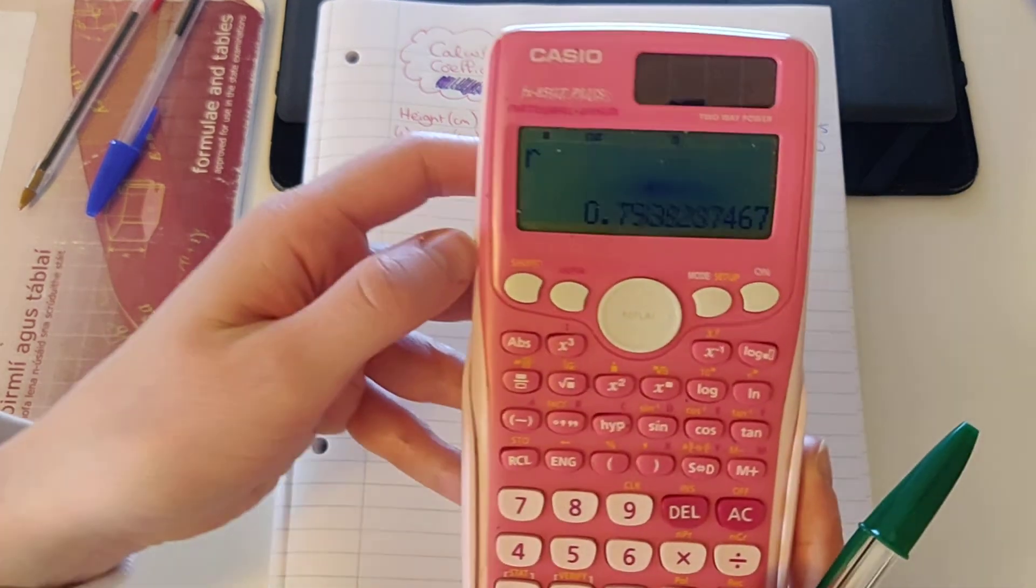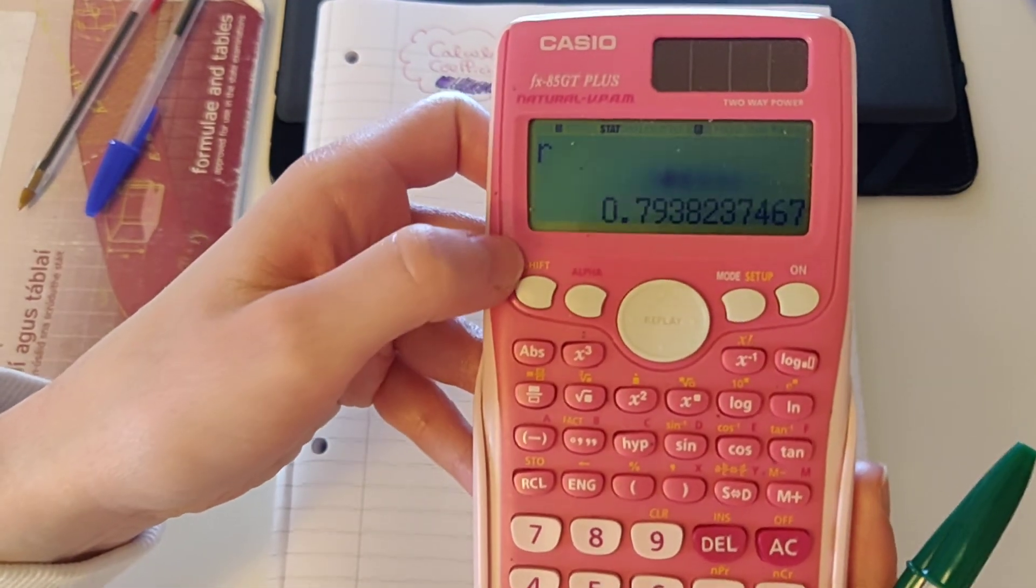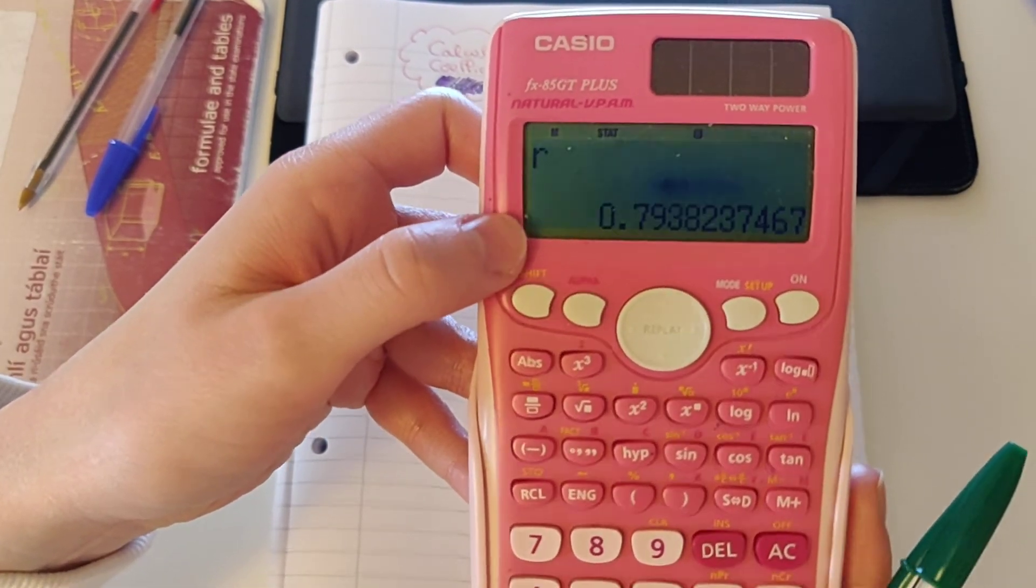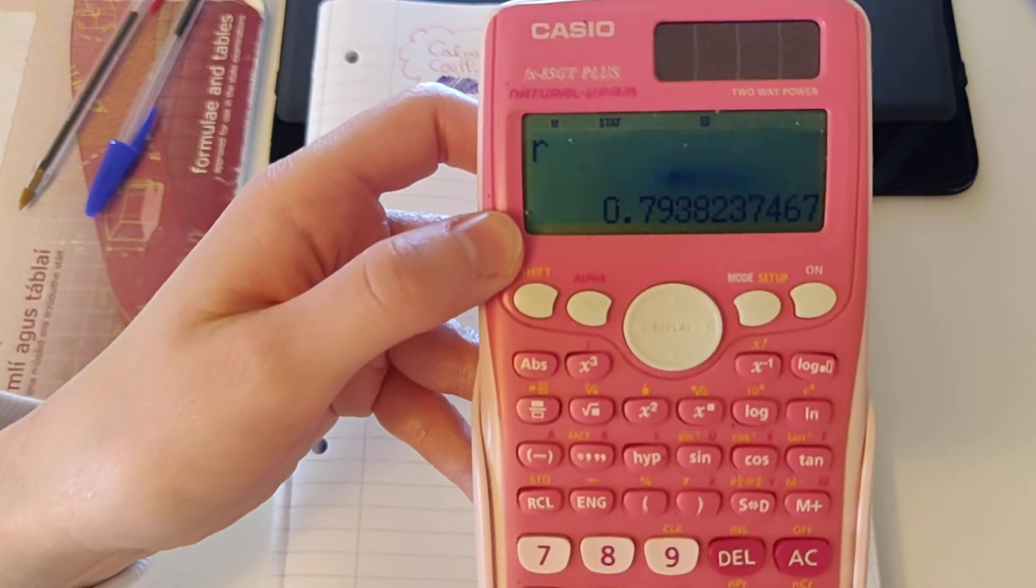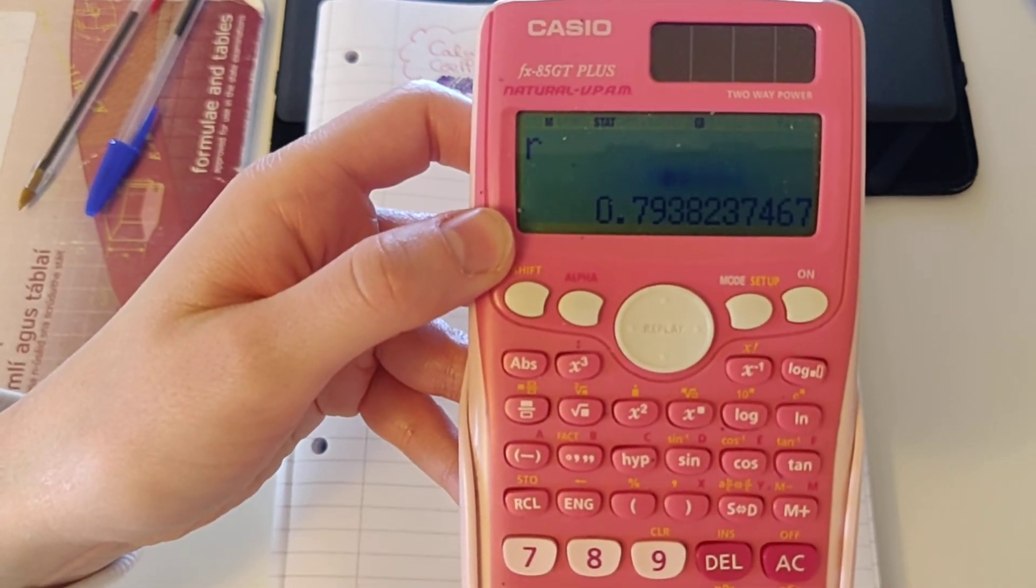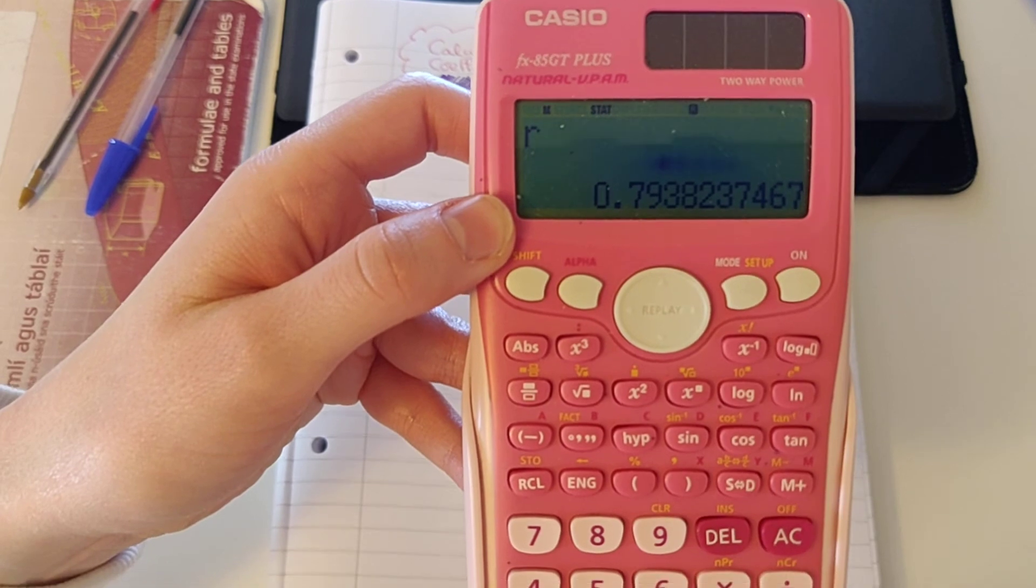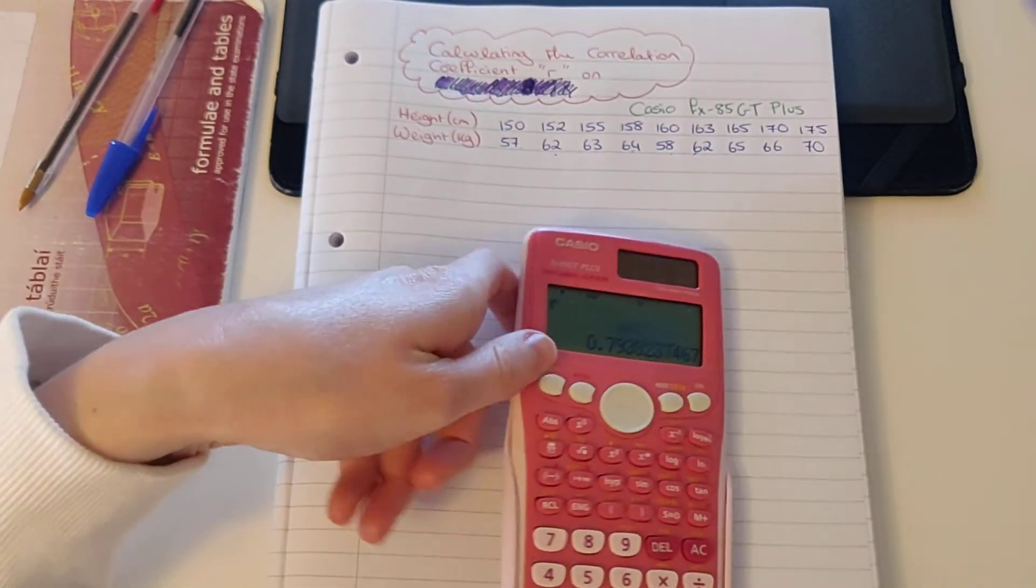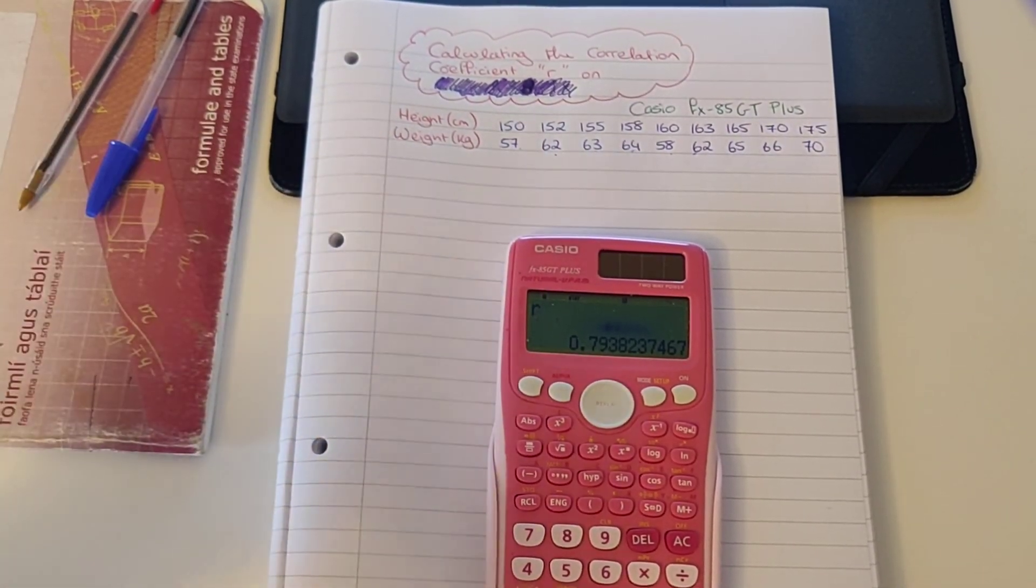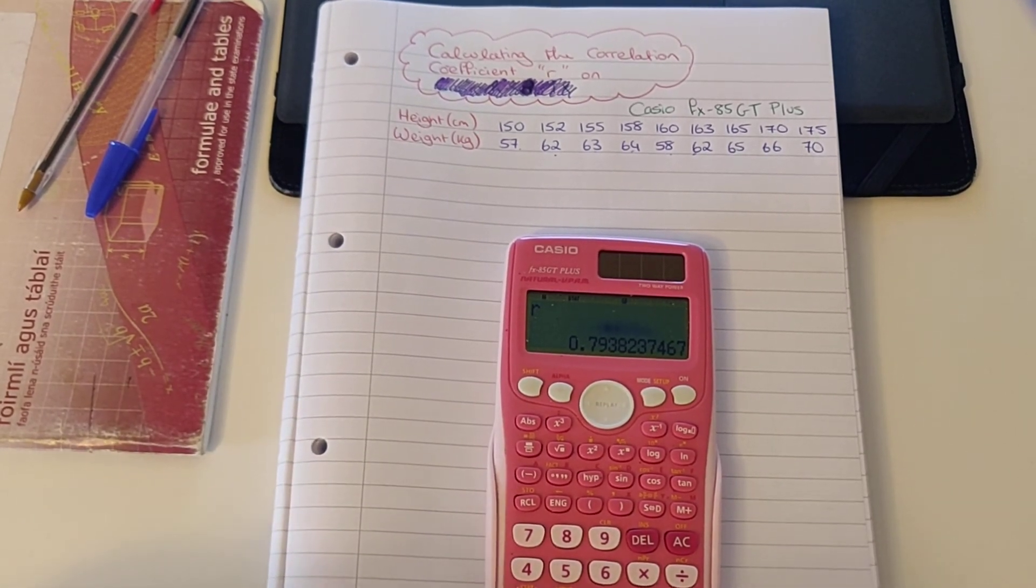This gives me a 0.79. It's a positive correlation because it's a positive number, which means that both are increasing. And 0.79 is very close to 1, which means that it's a strong positive correlation, which means as my height increases, my weight increases proportionally.